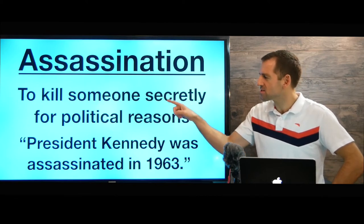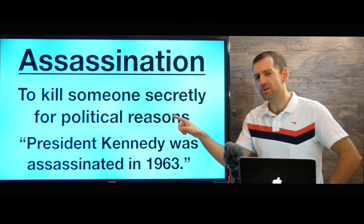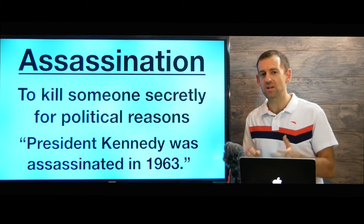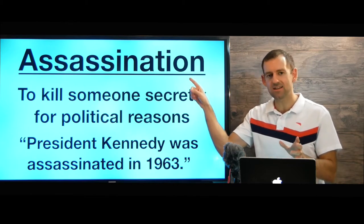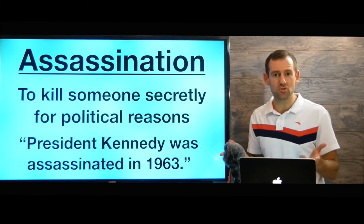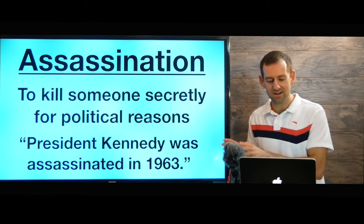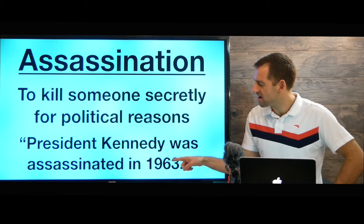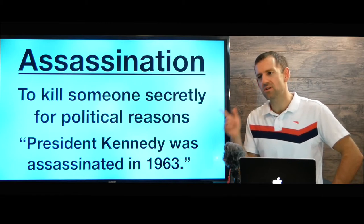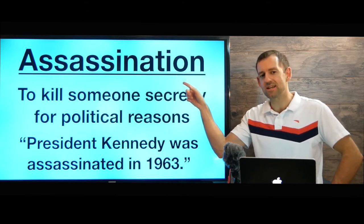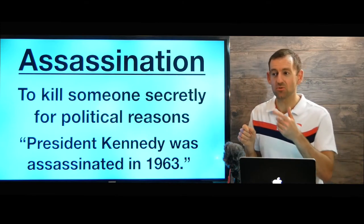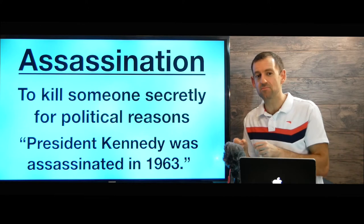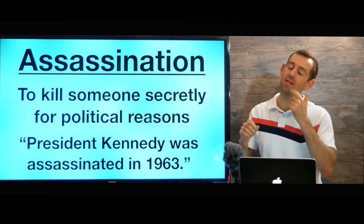Assassination means to kill someone secretly for political reasons. Both Hillary Clinton and Vladimir Putin have been accused of assassinating their political enemies — I have no idea if it's true, but that's what some people accuse them of. President Kennedy was assassinated in 1963. A person could also be assassinated through poisoning — putting poison into their food or drink.